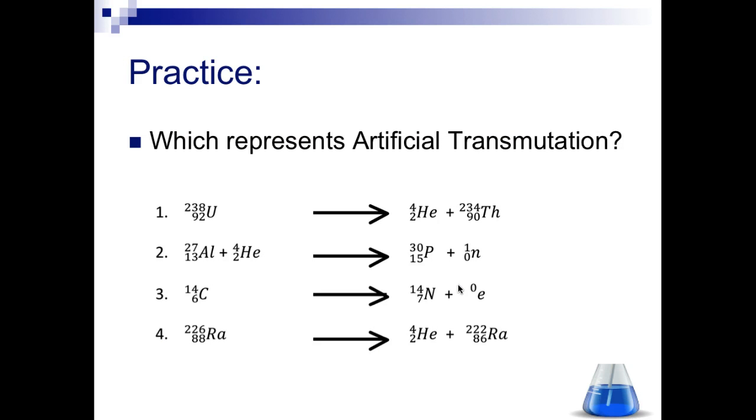Let's look at a practice problem. Which one of these following equations represents artificial transmutation? Remember, artificial transmutation and natural transmutations are the two types. Pause the video and unpause when you're ready. Great, welcome back. What did you come up with? You should have answered that number two is an artificial transmutation. How do we know it's artificial? It's artificial because we have two reactants, two things on the left-hand side of our arrow coming together to make something. That's how we know it's artificial transmutation.